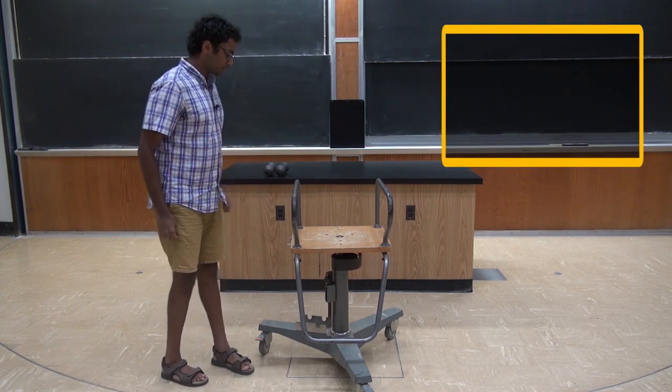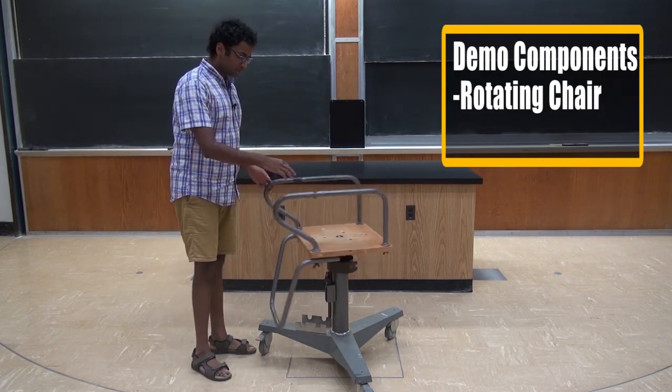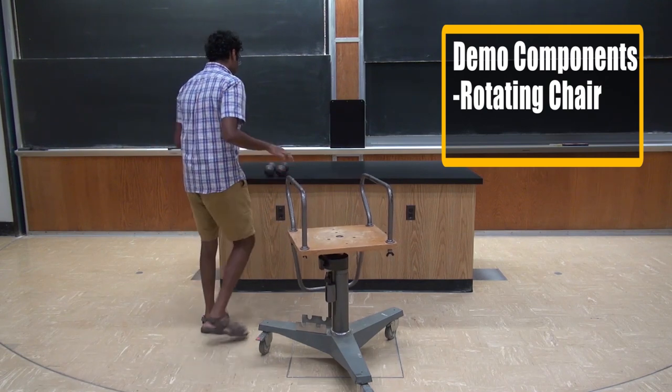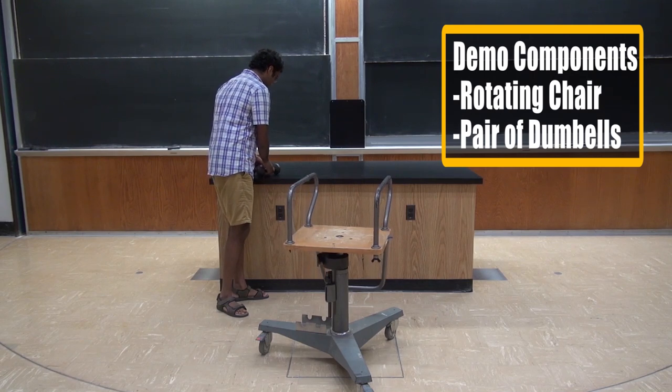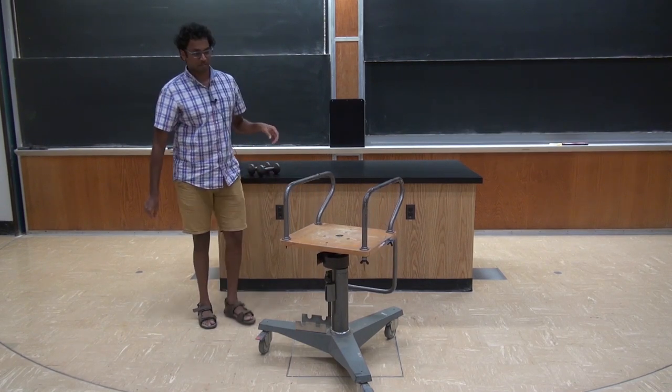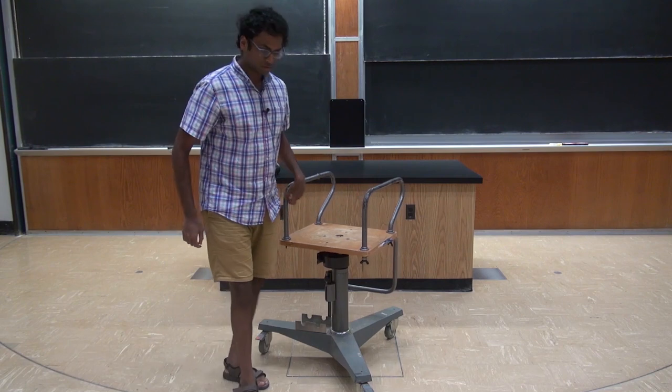There are just two things in this experiment, a rotating chair and a pair of dumbbell weights which I will get to. Before we do the actual experiment, let me show you what I am going to do.